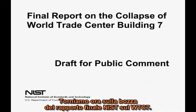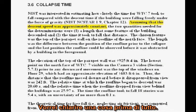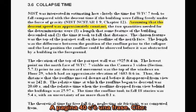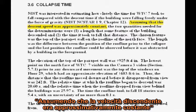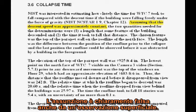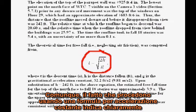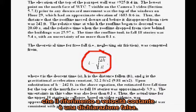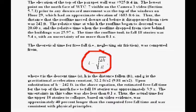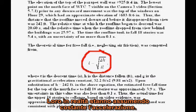Let's return to the NIST final report on WTC 7. On page 40 there is a phrase: "assuming that the descent speed was approximately constant." The assumption is clearly false from even casual observation. However, the fact that they proceed to use a formula for constant acceleration clearly indicates the constant speed reference was a misstatement — they are actually assuming constant acceleration.